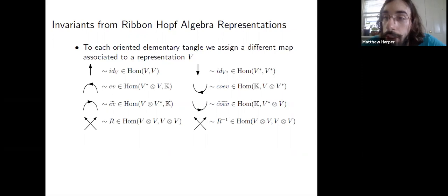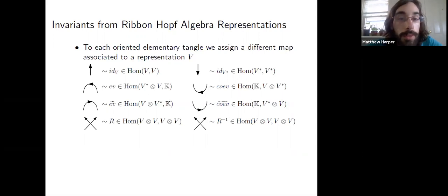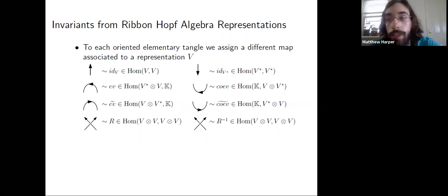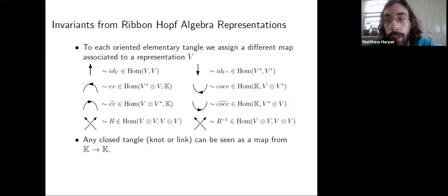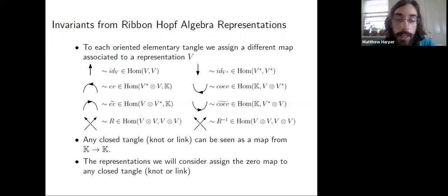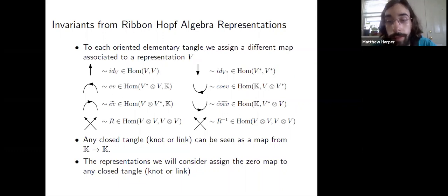Some background on computing the invariant: suppose we have a Ribbon-Hopf algebra, so we're able to define maps coming from the distinguished elements inside of the algebra. We take a representation and now we have these elementary diagrams, and we associate those with matrices on specified spaces. If we have a closed diagram — say a knot or a link — then we have a map from the ground field to itself. For something like the Jones polynomial, we'd have a Laurent polynomial in q. But in the case of the representations we're considering, the invariant evaluated on a closed tangle is the zero map — we get the zero invariant.